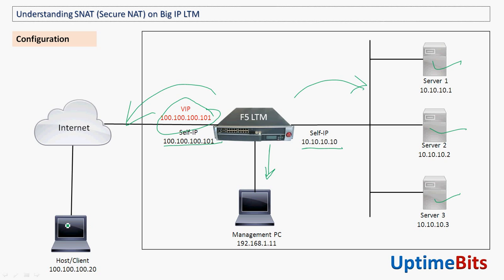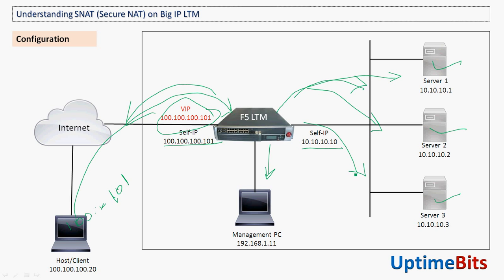Whenever someone types 100.100.100.101 in the browser, they get routed to this F5 LTM box. F5 LTM will in turn translate this IP to one of the private IPs available on the three servers, and then based on that the servers will respond. I will now tell you what the issue is with this setup.